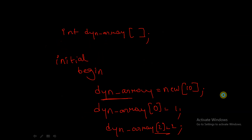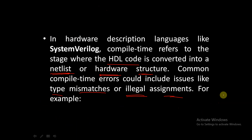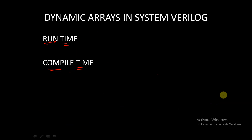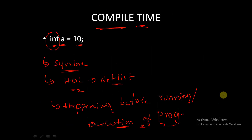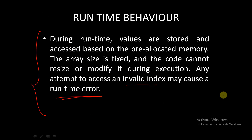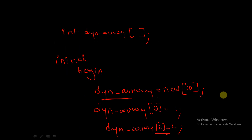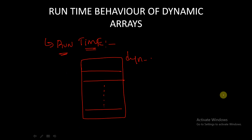To summarize this session: we started with compile time and runtime in SystemVerilog — what is meant by compile time and runtime. We saw the difference in compile time and runtime behavior for fixed arrays, then moved to the compile time and runtime behavior of dynamic arrays — what dynamic arrays are, the syntax for declaring them, and how to allocate memory using the new keyword. In our next session we will see more detail about dynamic arrays. If you have any doubts or queries you can ask, otherwise that's all for this session. Thank you.